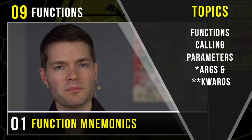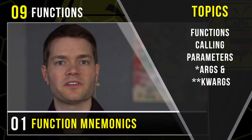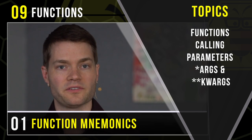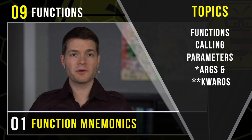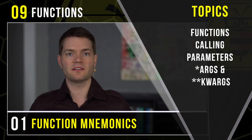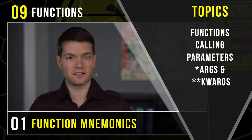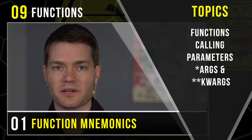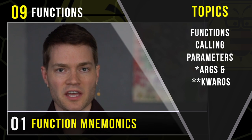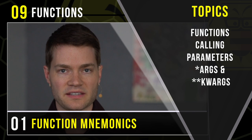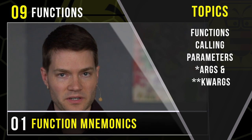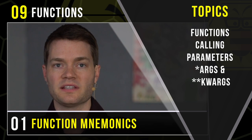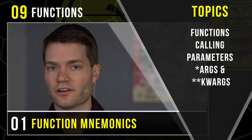We're also going to talk about why we use DEF in Python to abbreviate a function. And then we're going to talk about calling a function — what does it mean to call a function, what's the syntax that's required to make that call, and how can we get back anything from our function? Finally, we're going to talk about the function's parameters — what a parameter is, how that fits into the concept of variables, and the difference between saying parameters and arguments.